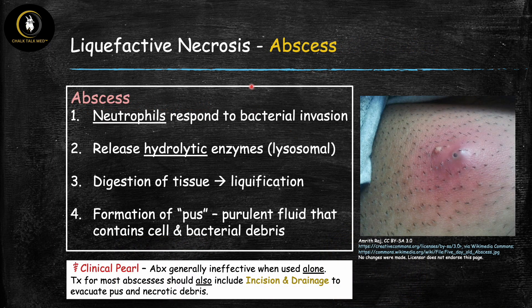Bacterial infections that are purulent cause formation of pus and turn into abscesses. When bacteria invade the body, the main white blood cells that respond are neutrophils — phagocytes that can also release their lysosomal enzymes to kill bacteria. The problem is that these lysosomal enzymes are hydrolytic and therefore toxic. With a significant bacterial invasion — typically by Staph aureus or MRSA — you get an overwhelming release of hydrolytic lysosomal enzymes that not only kill the bacteria but also damage surrounding cells and tissue as innocent bystanders.